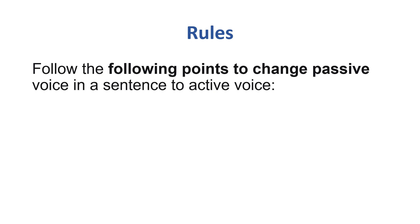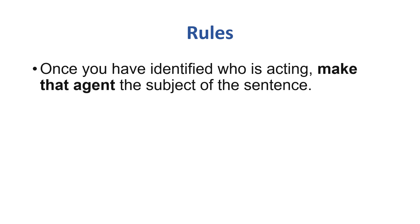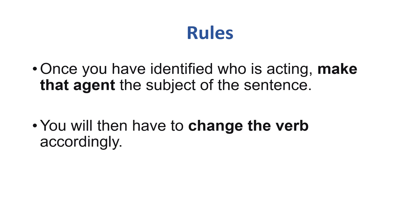Following are the points to change passive voice to active voice. First, you will have to find the agent — 'by the' or who or what is active. The passive voice is used to indicate who is acting. You identify who is acting, then make that the agent or subject, and then change the verb in accordance with the sentence.